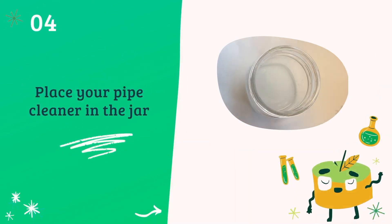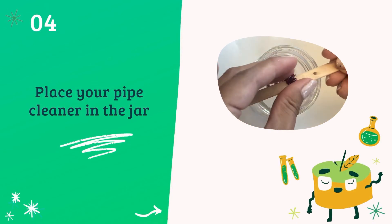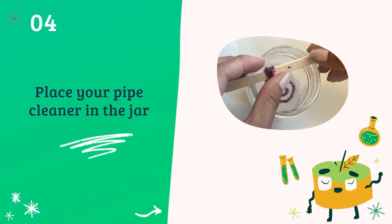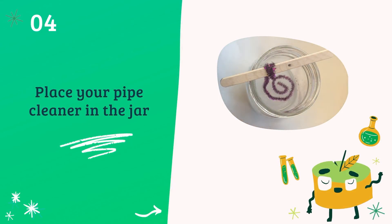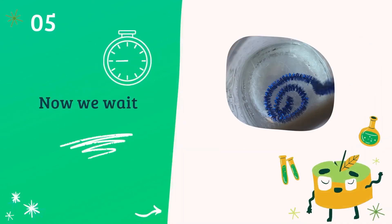Next, place your pipe cleaner in the jar using the popsicle stick to suspend it in the solution. Make sure that your creation is covered in the water because that is where the crystals will form. Place your jar where it won't be moved. You can have the adult help since the jar will be hot. Crystals can start forming within a few hours and will be finished within a few days.